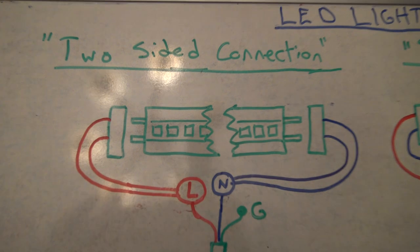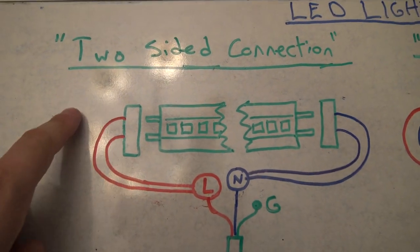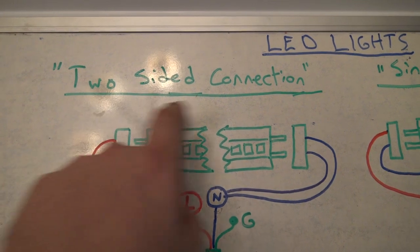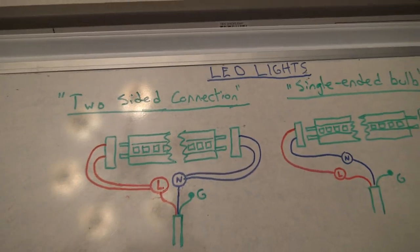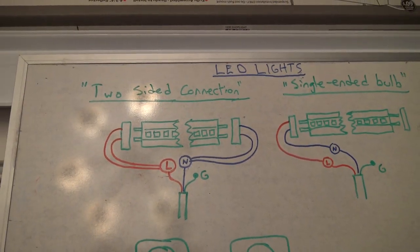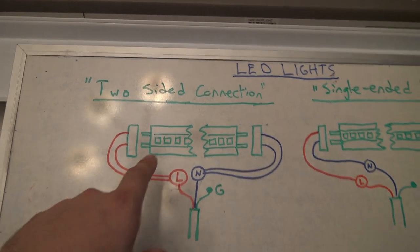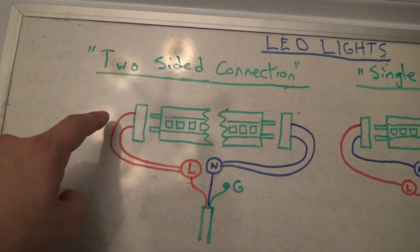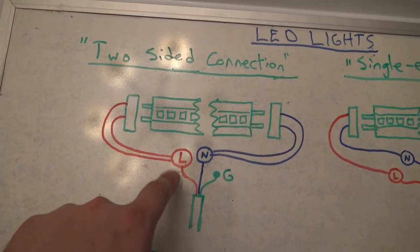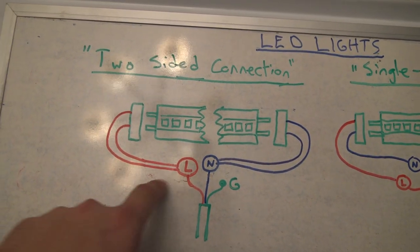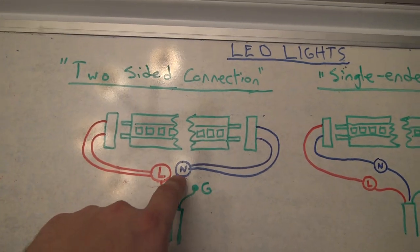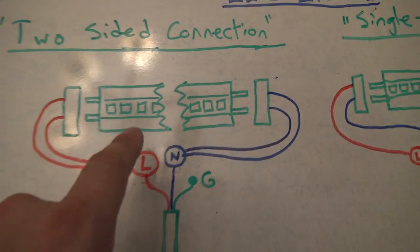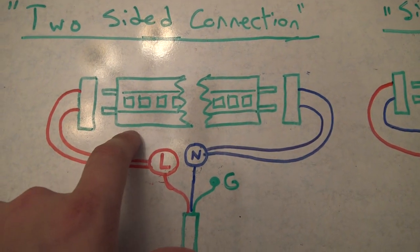But here they are. The first one is a two-sided LED light. Sometimes it'll be called two-sided connection. Sometimes it'll be called like two-ended bulb, something like that. It basically denotes that you are taking your load on one end, and your neutral on the other end of that light. And this is per bulb.